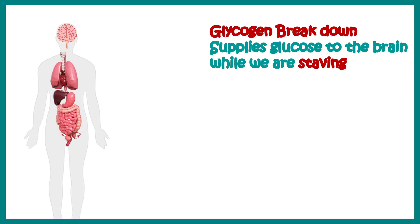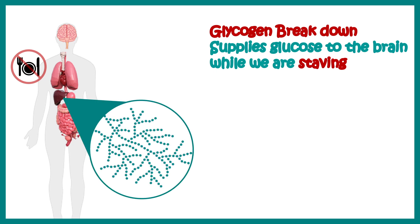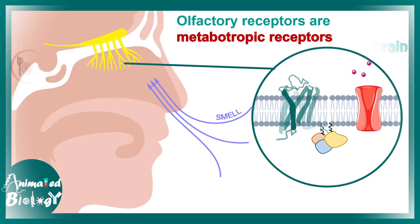Glycogen breakdown supplies the brain and muscles with enough glucose. When we are starving, the brain constantly needs glucose, and the reservoir of glycogen in the liver and muscle is broken down to provide it.